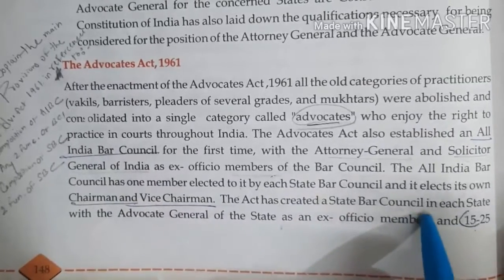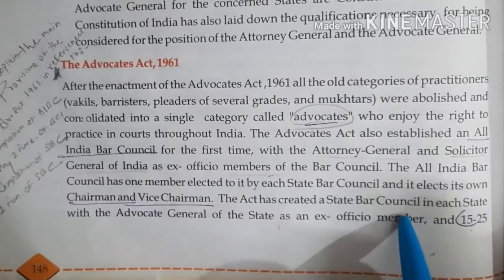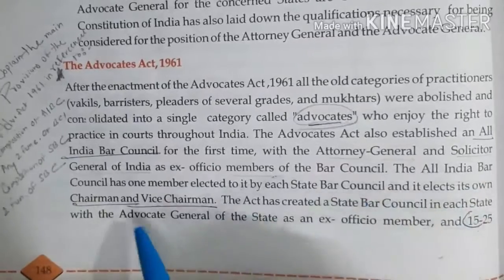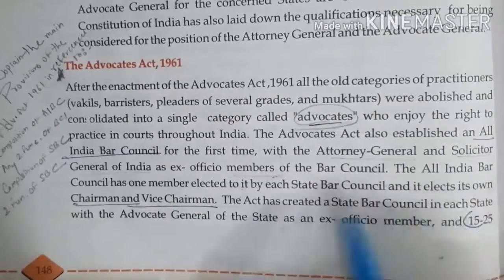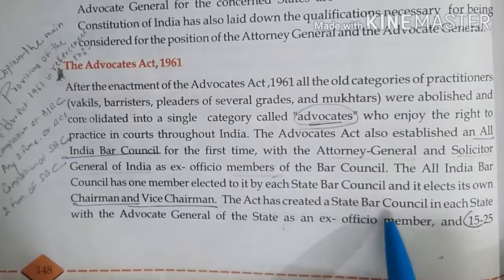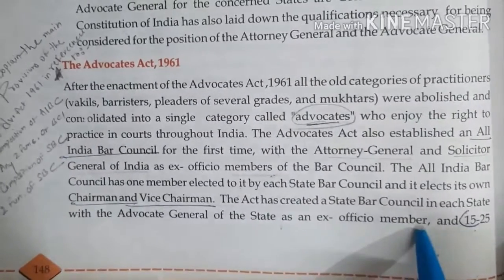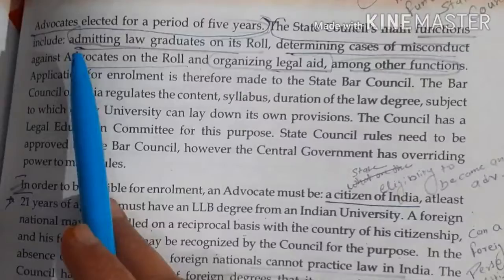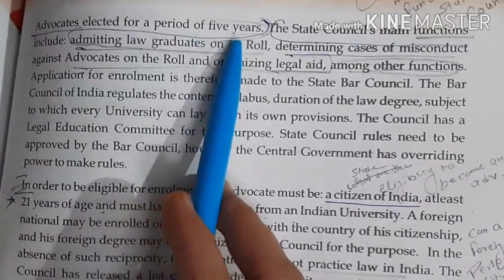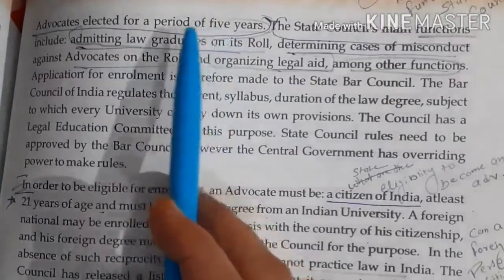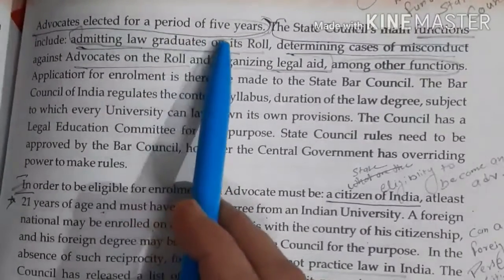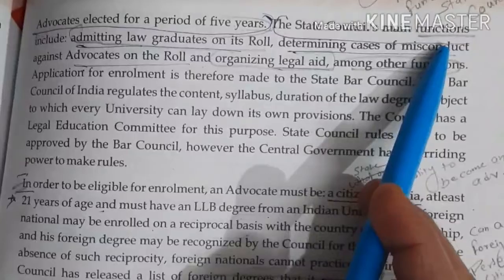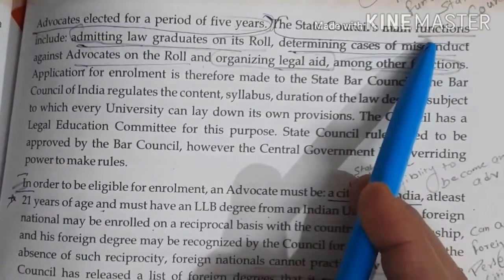The Act also created State Bar Councils. The composition of the State Bar Council includes a chairman and vice chairman, the Advocate General of that state as an ex-officio member, and 15 to 25 advocates elected for a period of five years.